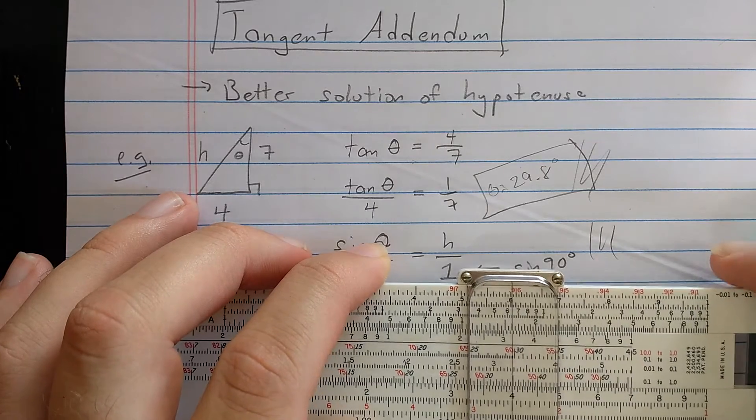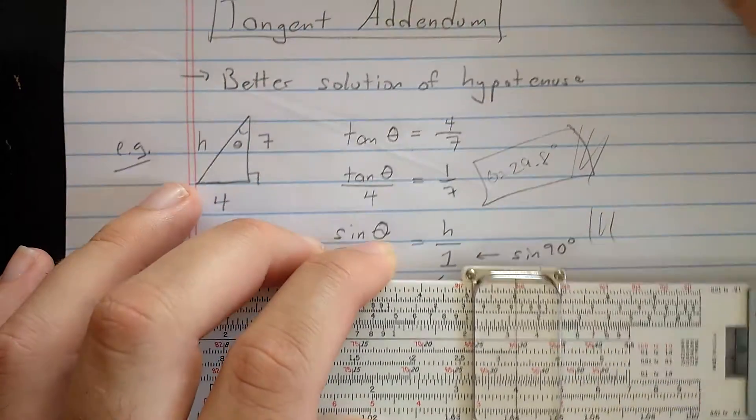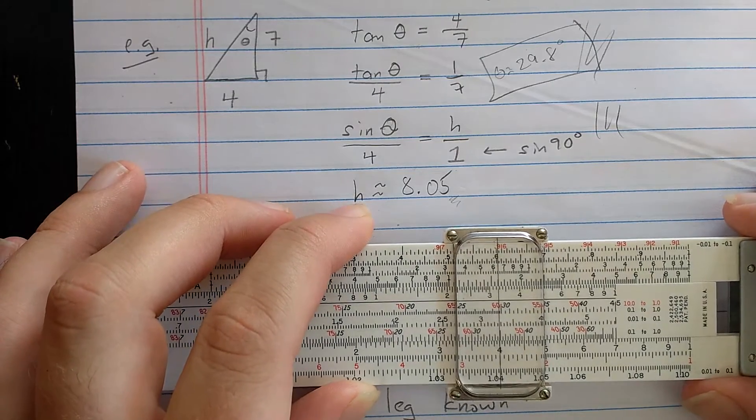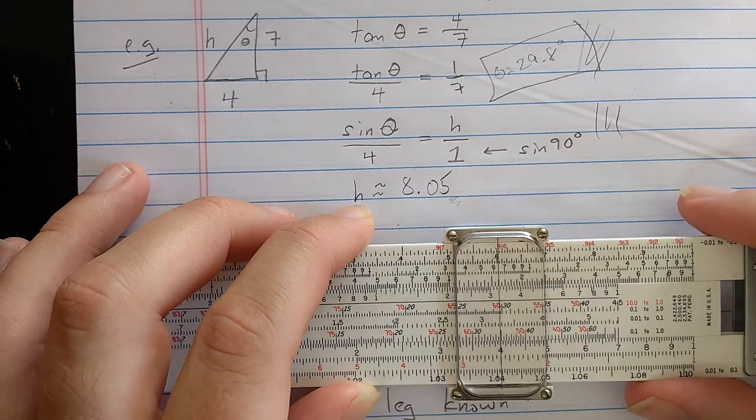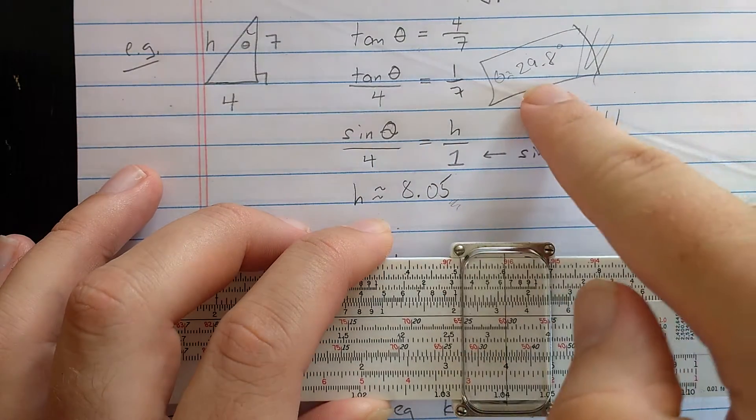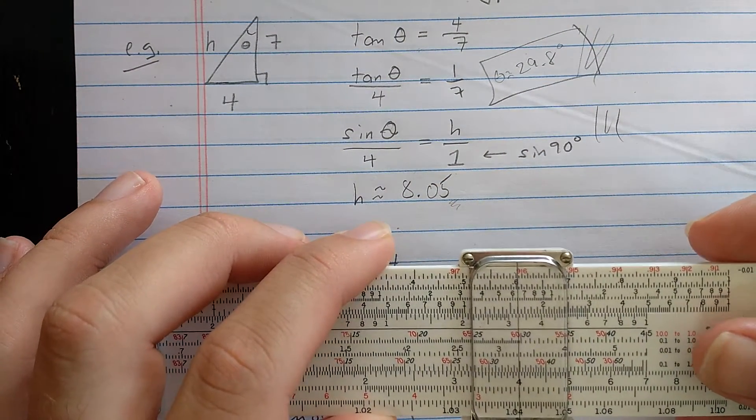But the trick here is you don't have to move the cursor to do the second part where I use the law of sines. The cursor is set at the 4, and what I want to do is put sine of that 29.8 over the 4.